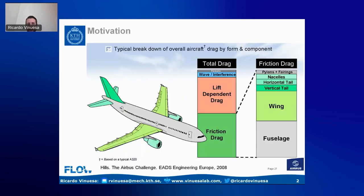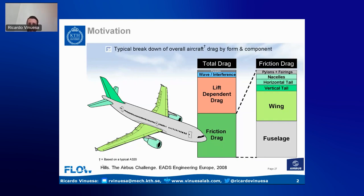I would like to start with this motivation slide borrowed from Airbus. For a typical airliner, around 50% of the drag comes from the wings. Looking at the wing, around 50% of that comes from friction — turbulent boundary layers developing around the surfaces of the wings — and around 40% comes from the lift-induced component, due to the wing-tip vortices that form at the end of the wing.